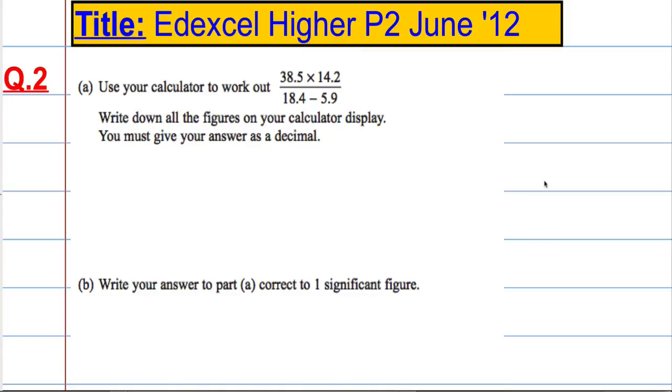Right, so question 2a. We're asked to use our calculator to work out 38.5 times 14.2 over 18.4 minus 5.9. We're asked to write down all the figures on your calculator display and give our answer as a decimal.